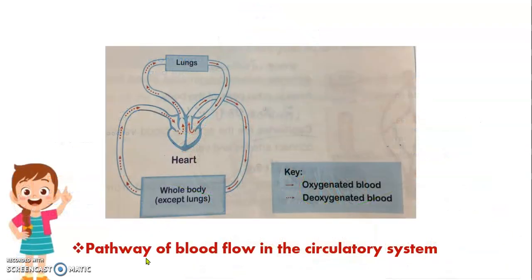This is the pathway of blood flow in the circulatory system. The full arrow indicates oxygenated blood, and the broken arrow indicates deoxygenated blood.